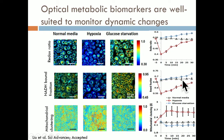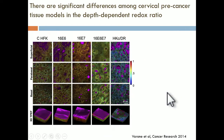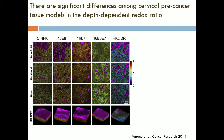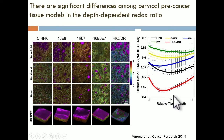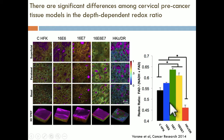We can do this in three-dimensional tissues. Here you see redox-coded images from normal epithelial tissues compared to cervical precancerous tissues. Different hues correspond to different metabolic redox ratios and states. It's clear that normal tissues are very different from the cervical precancerous tissues, and also different from tissues that differ only by the overexpression of one or two oncoproteins associated with human papillomavirus-16 expression. We can quantify these differences as a function of depth — the type of resolution we cannot get with PET or fMRI.